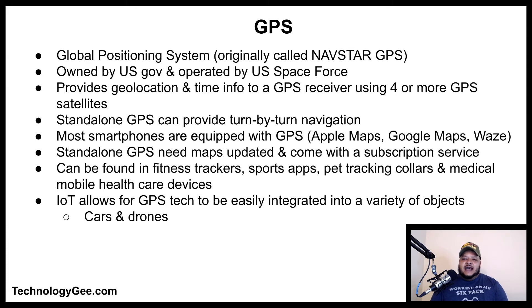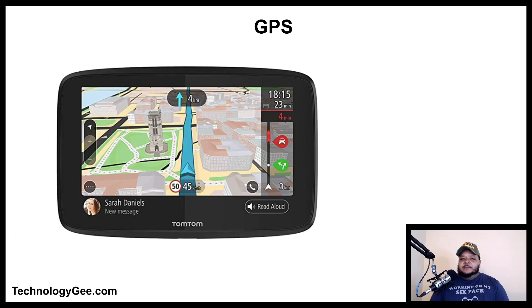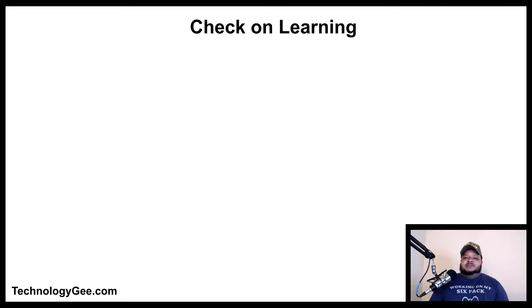GPS technology can be found in fitness trackers, sports apps, pet tracking collars, and in the medical mobile healthcare market. The Internet of Things has allowed GPS technology to become easily integrated into a variety of objects such as tracking personal properties like cars and drones. Here is an example of a TomTom GPS unit — we all used to see these back in the day, but present day, people rarely use them and instead use their phones to get around.